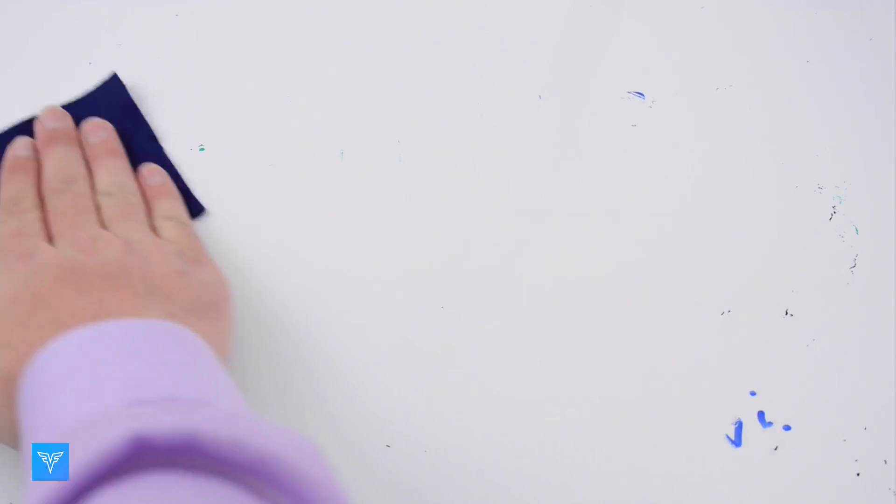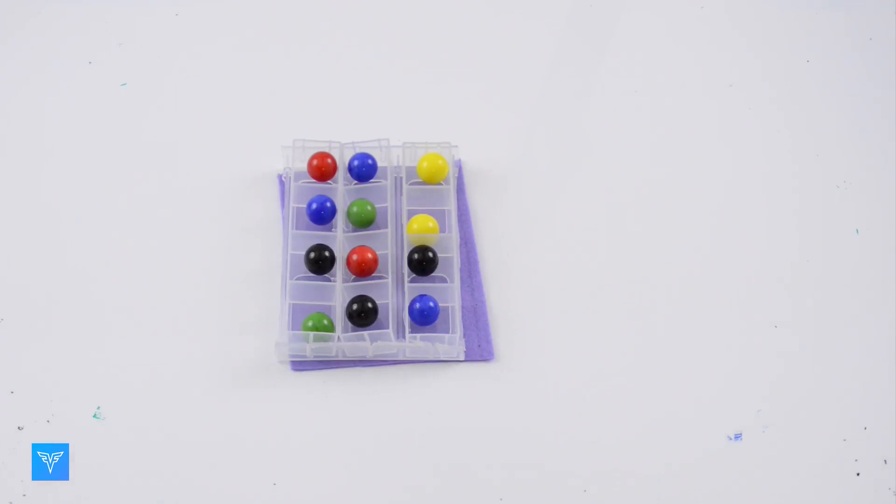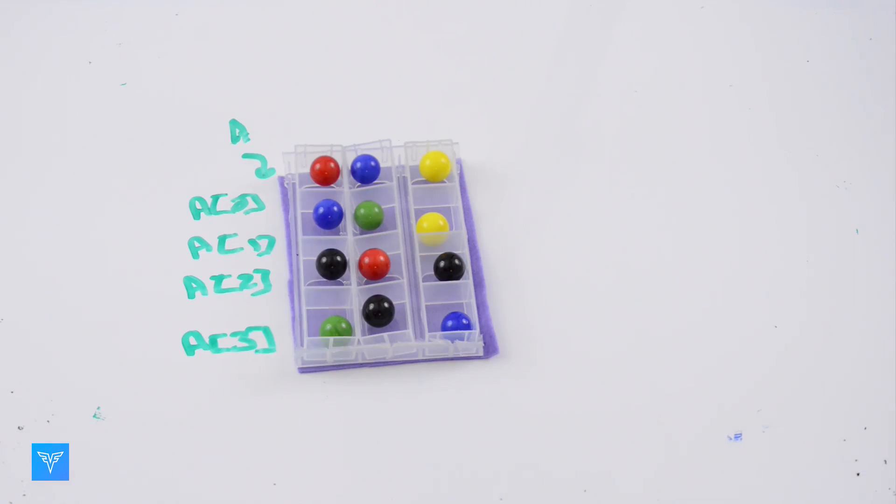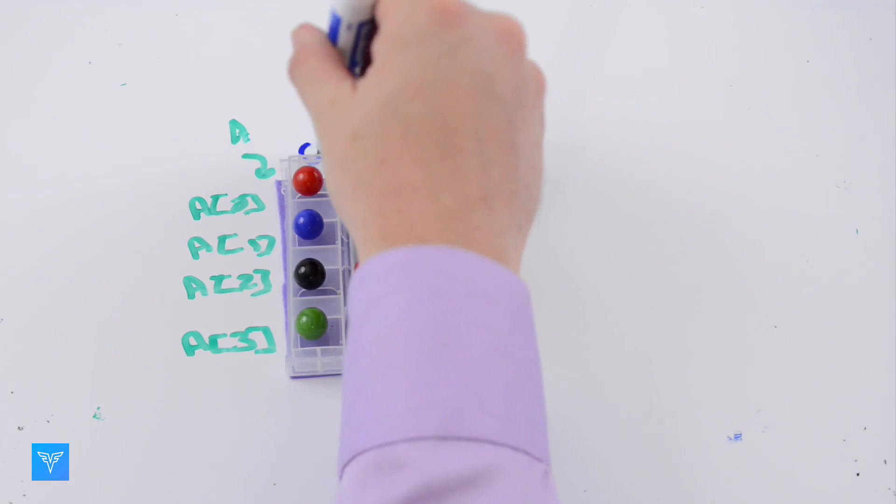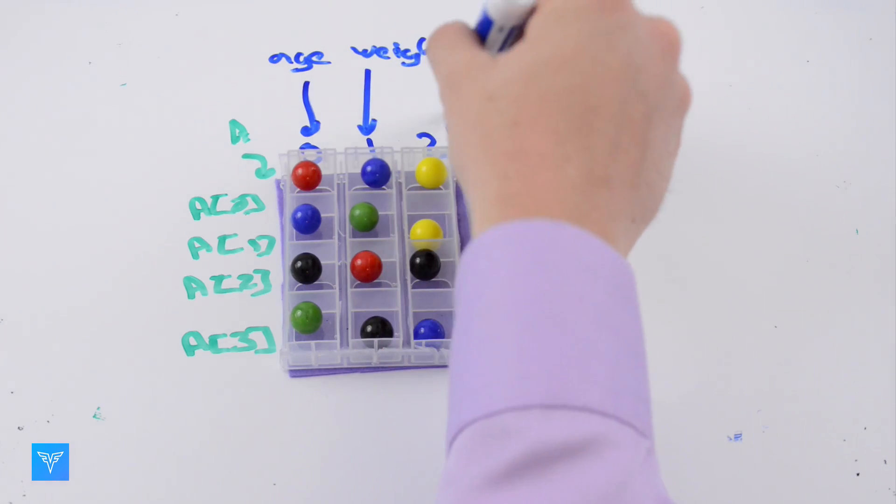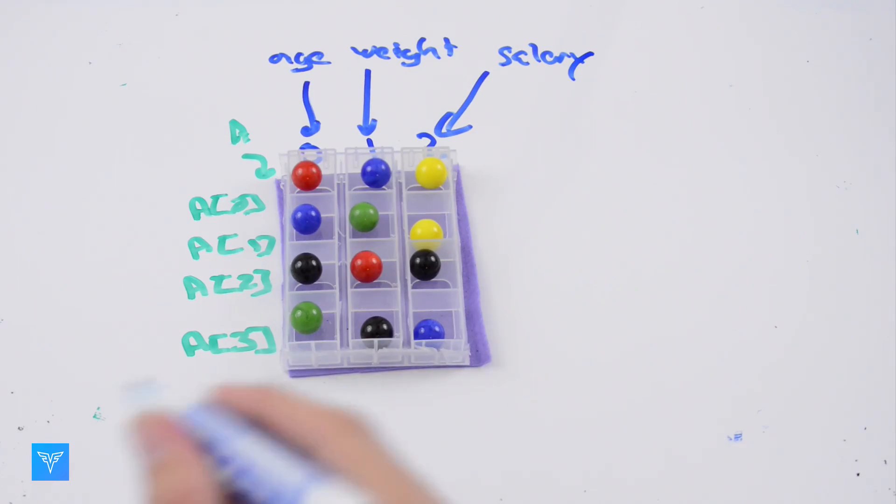In other cases, we want to force all the entries A[i] to have the same length. For example, if each A[i] stores information about the ith person, and the columns store age, weight, and salary information, we're going to want to make sure that each A[i] has exactly three elements, so we know we're not missing any information.